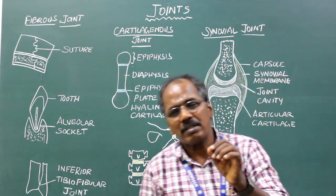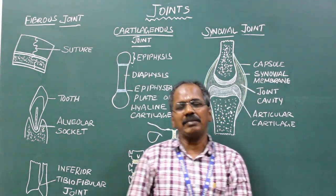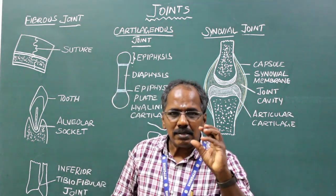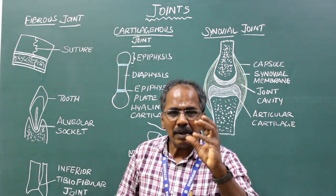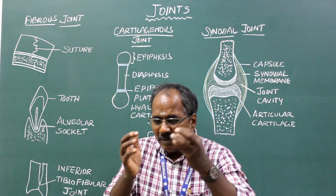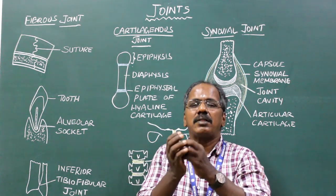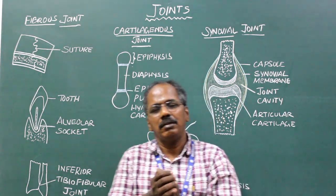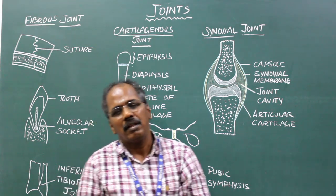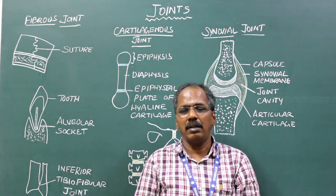Classification of synovial joints. Number 1: Ball and Socket variety. In this, one of the articular surfaces is spherical or round, which fits into a socket. For example: shoulder joint, hip joint, and talocalcaneonavicular joint.